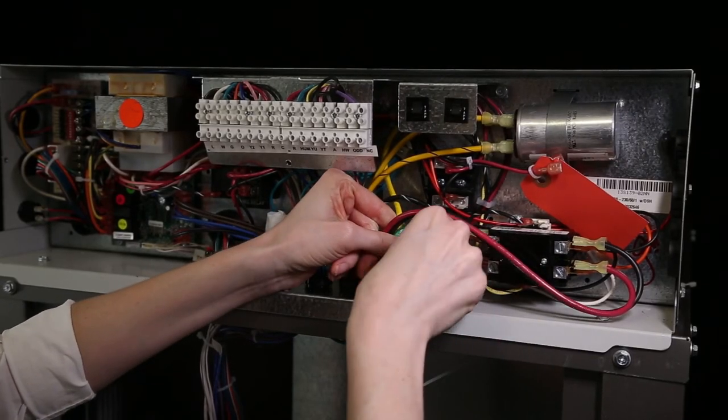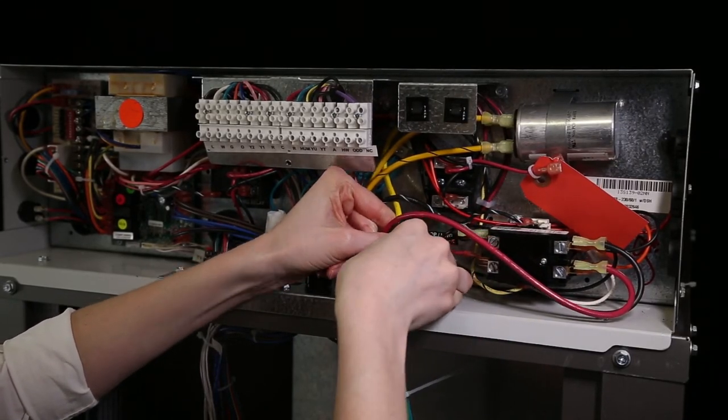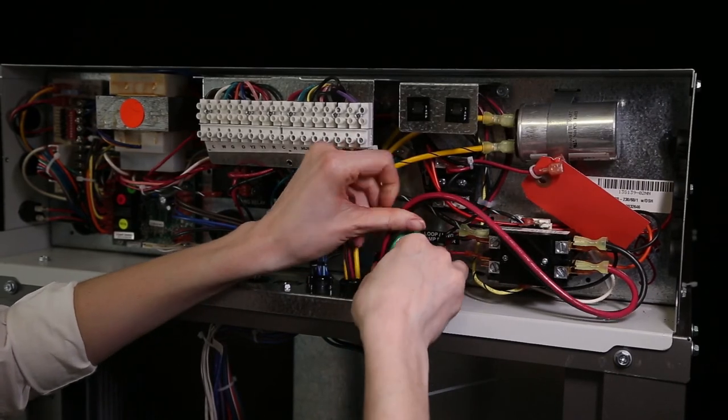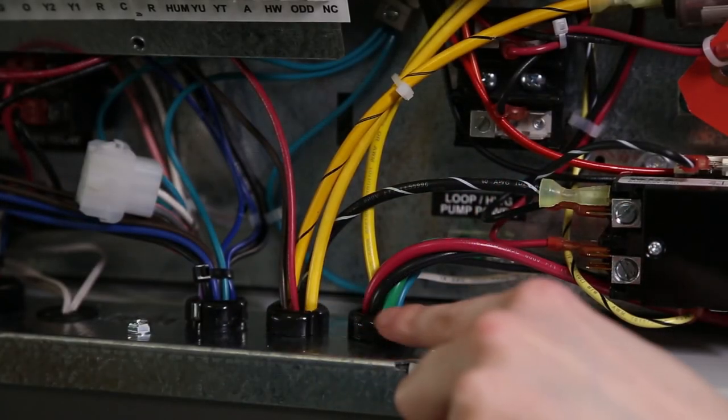Once all wiring is complete, reinstall the existing strain relief into the top cover control plate and use the new strain relief provided in the kit around the new wires.